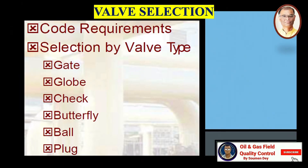So what are the basic things we need to consider? Here are the code requirements and the selection of valve type. The popular valves we are using in the oil and gas field are gate valve, globe valve, check valve, butterfly valve, ball valve, plug valve, etc.